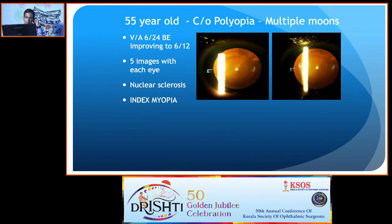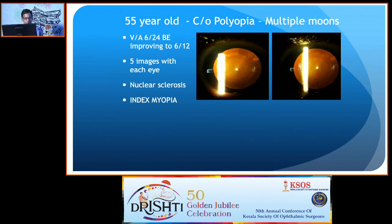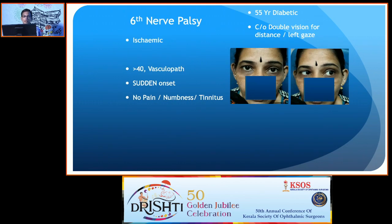One patient had polyopia — she saw 10 moons; covering one eye still showed 5 moons. She had seen multiple ophthalmologists, one neurologist, and one psychiatrist who thought it was a psychiatric problem. Finally she underwent cataract surgery and all the polyopia disappeared. This illustrates how monocular visual disturbances can be misleadingly attributed to neurological or psychiatric causes.